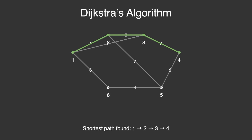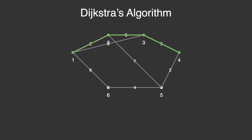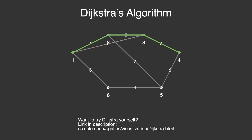But here's the catch. Dijkstra needs to keep sorting through a big list of options again and again. This sorting takes time. The time complexity is what we call O of M plus N log N. On huge maps like all the roads in the world, that sorting becomes very slow. If you'd like to try Dijkstra yourself, there's an interactive demo linked in the description.